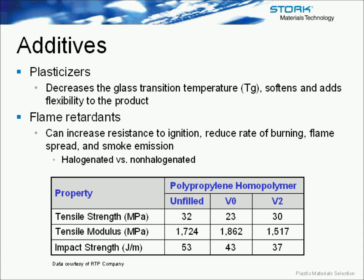You can see that as the flame retardant level increases from unfilled to V2 to V0, the tensile strength, modulus, and impact strength are all affected. So when selecting a material, it's important to understand its full properties — for example, if you choose a polycarbonate material and then want it flame retardant, you have to understand that the other properties could change as well, and those need to be considered.